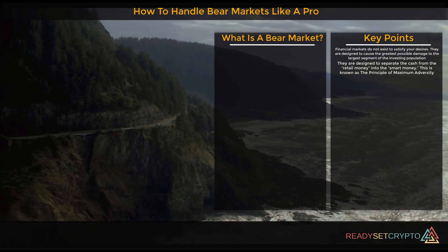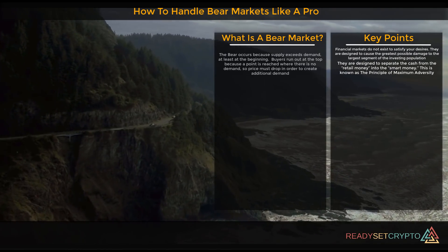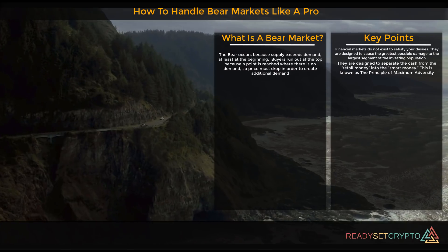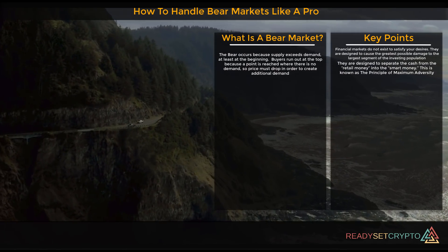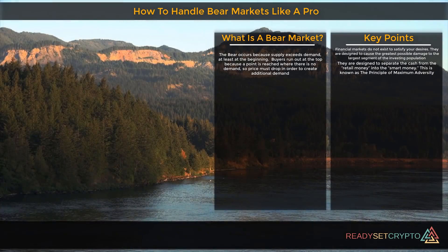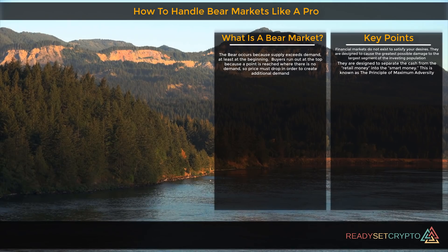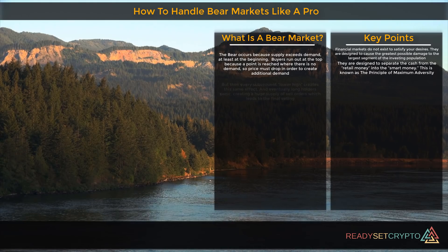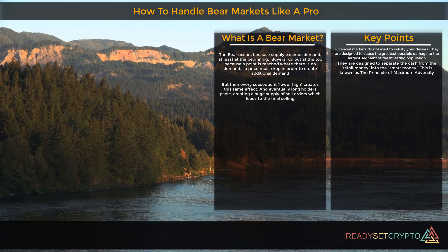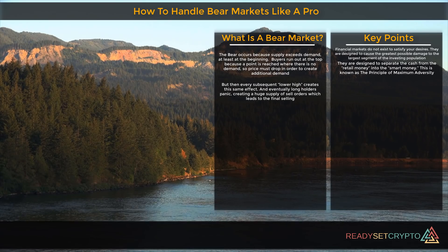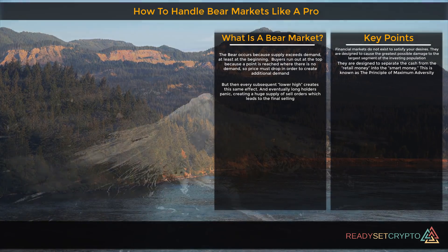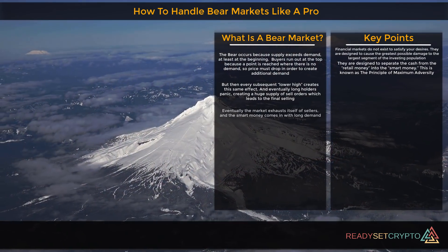So what is a bear market and why do they occur? The bear occurs quite simply because supply exceeds demand — at least at the beginning. Buyers run out at the top because a price is breached where there's no demand, so price must drop in order to create additional demand. But then every subsequent lower high creates the same effect, and eventually long holders panic, creating a huge supply of sell orders which leads to the final selling.